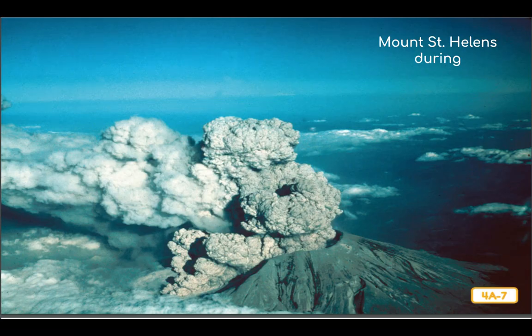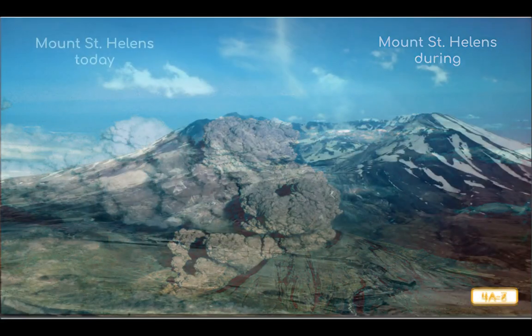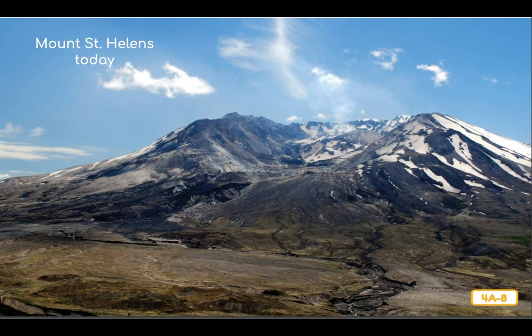Lava was not the main problem with Mount St. Helens. Rather, it was the immense amount of rock and ash that exploded into the air, as well as the landslides that followed as the mountain came crashing down into the valley below. This is what Mount St. Helens looks like today — still tall enough to rise above the clouds, but clearly not the same mountain. It has erupted several more times after 1980 and still erupts occasionally to this day.